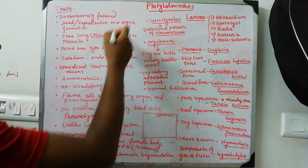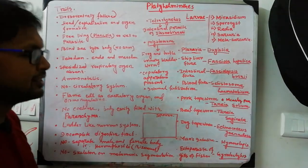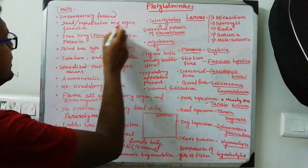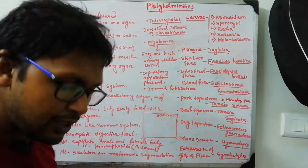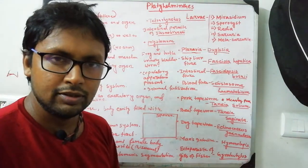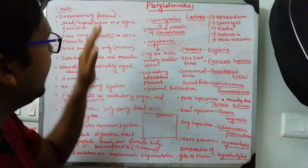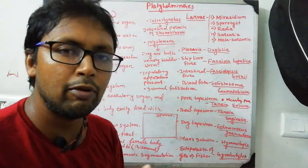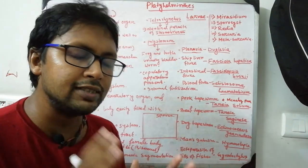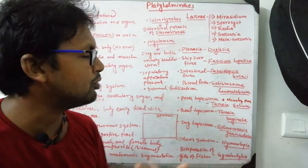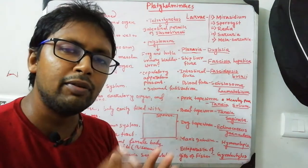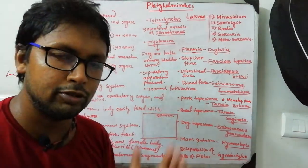The first trait of Platyhelminthes is that the body is dorsoventrally flat. Second, cephalization and organ formation are first encountered here - head development and organ development. In the previous two phyla, Porifera had only cellular level of organization, and tissue organization was first encountered in Cnidarians. The nervous system in Platyhelminthes is a ladder-like nervous system.